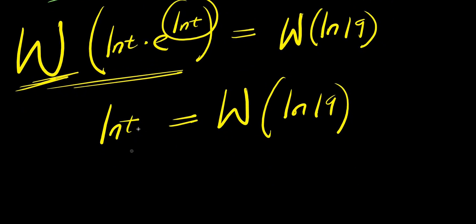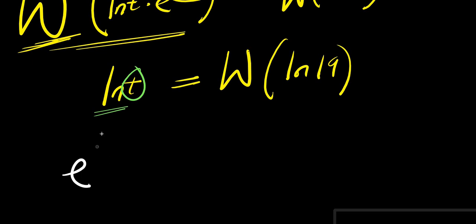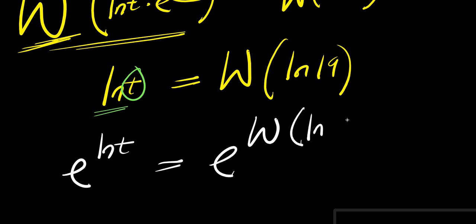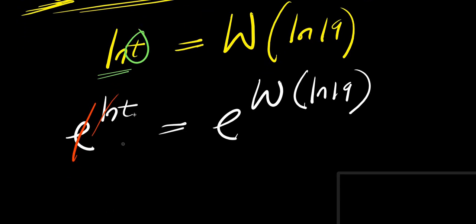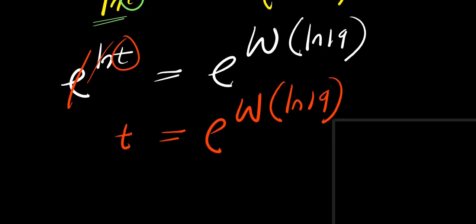Now we are solving for t, so we need to isolate t. For us to achieve that, we need to eliminate this ln. So we are going to make use of e — we have e to the power of ln t equals e to the power of W of ln 19. And e will cancel out the ln, because e to the power of ln is 1, so we have t equals e to the power of W of ln 19. So this is our solution.